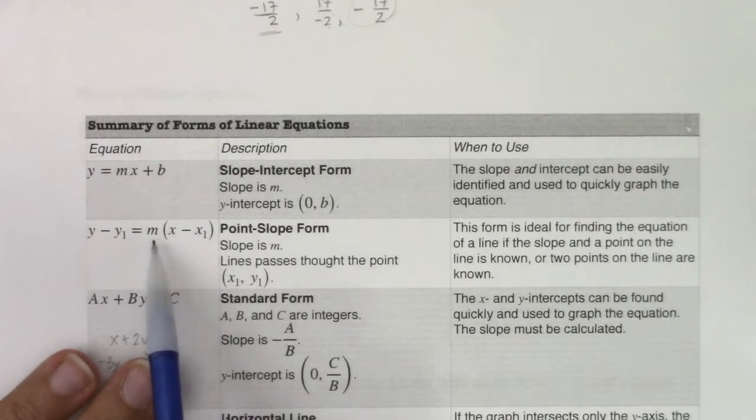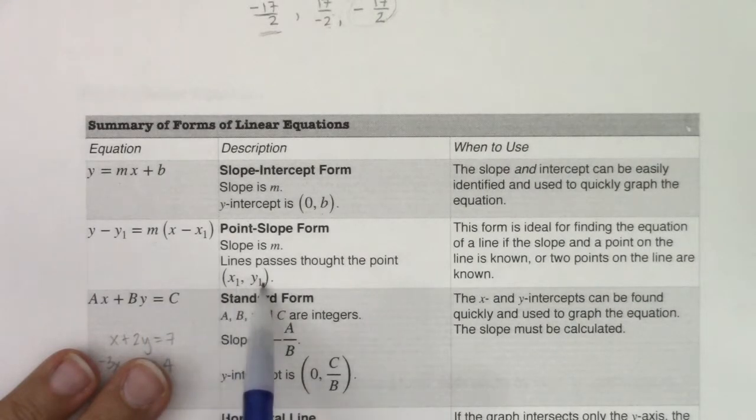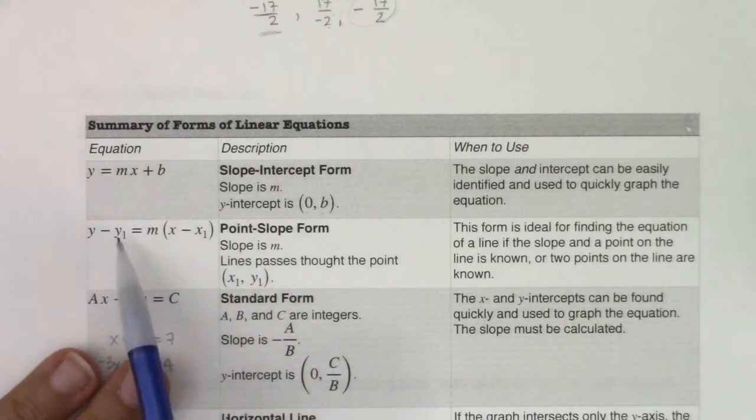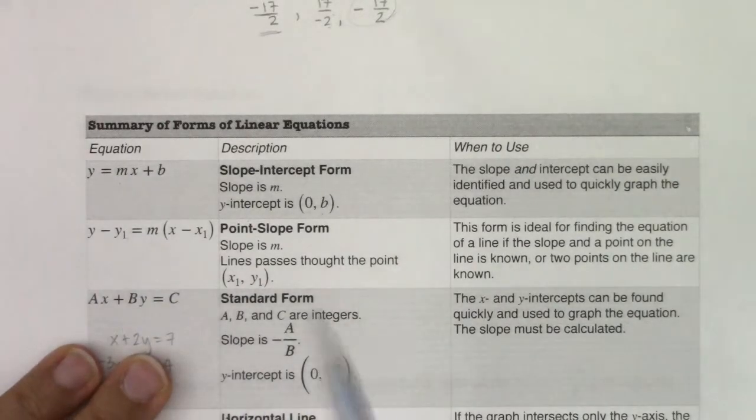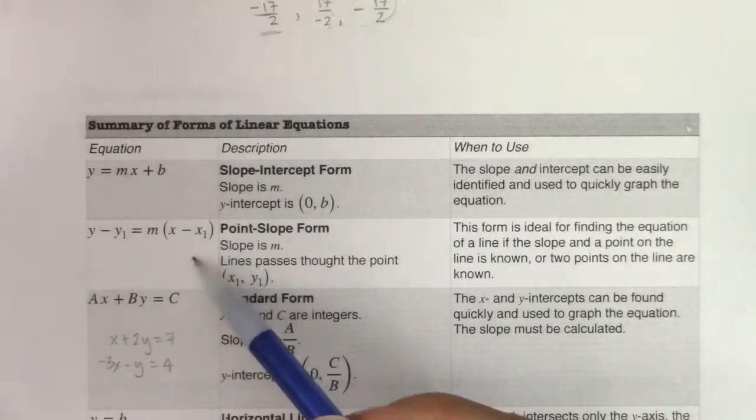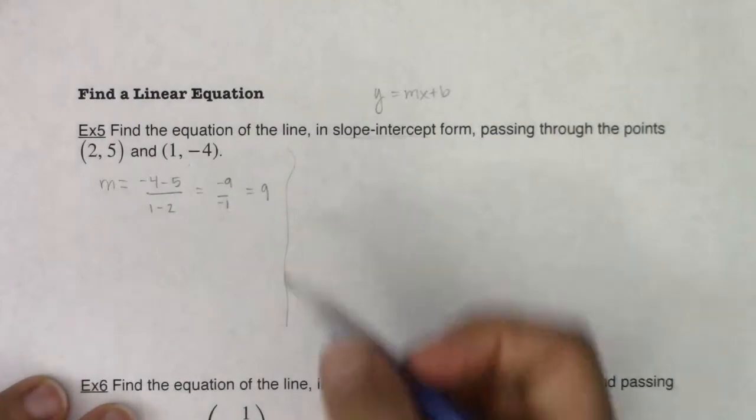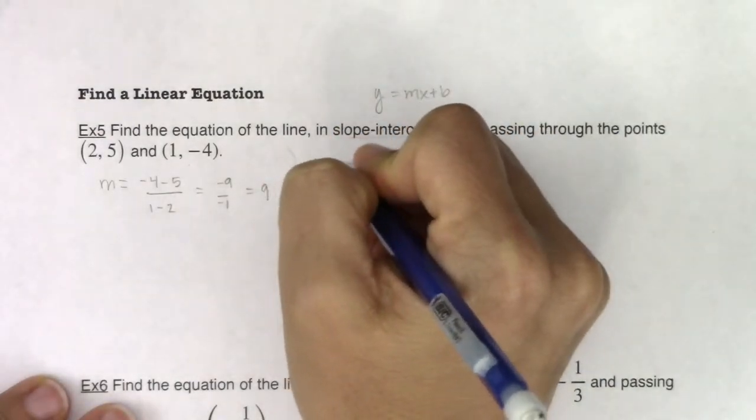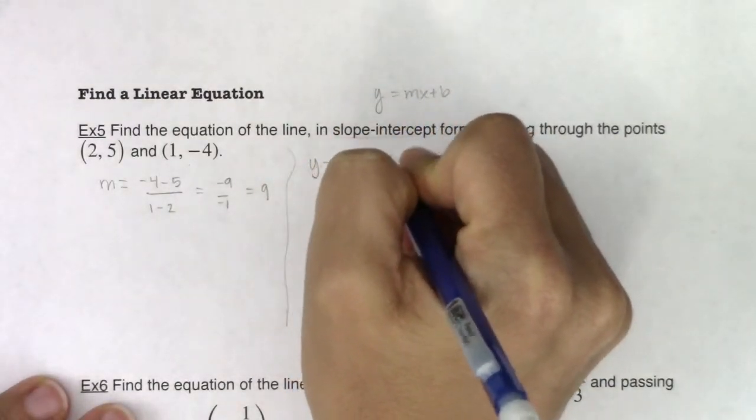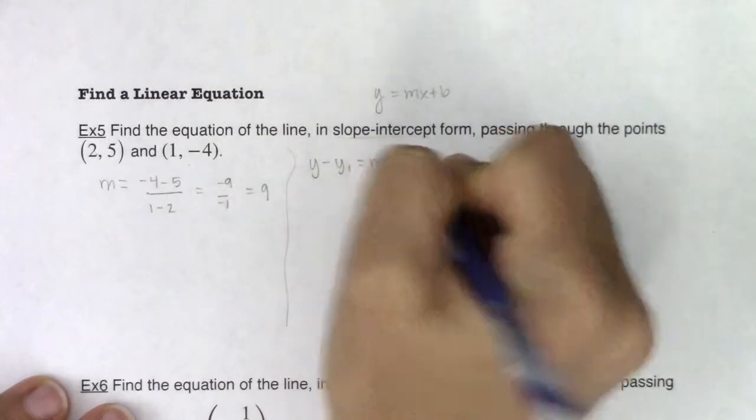So at this point, we know the slope is 9. And you can use either (2, 5) or (1, -4) as your points. I don't care which one and neither does the equation. You'll get the same answer regardless of if you plug in (2, 5) or (1, -4). But just for simplicity sake, I'll plug in the ones with the positive values because I like to stay with positive numbers.